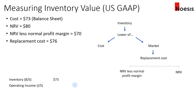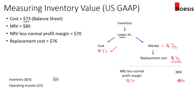In the final scenario, cost is $73 on the balance sheet, replacement cost is $76, with the same lower limit of $70 and upper limit of $80. The replacement cost is within range, so market equals $76. Between $73 and $76, the lower is $73 — the same as the carrying amount. No change is needed, and there is no impact on the income statement. This diagram helps visualize all the requirements of IFRS versus US GAAP.